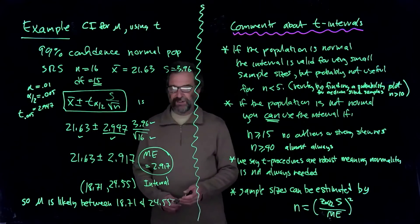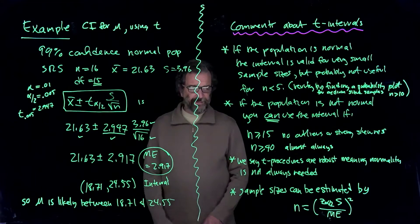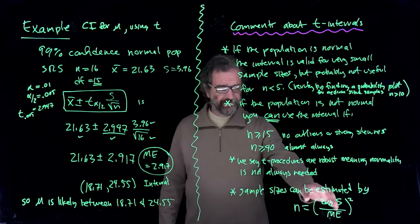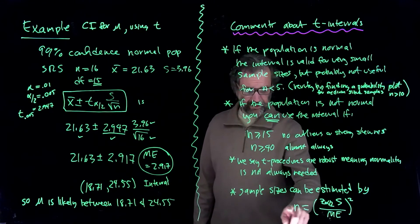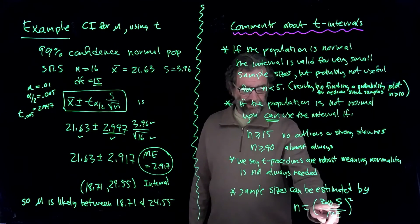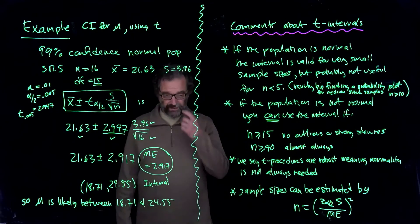So it's a similar calculation that we did with the proportion confidence intervals where there was a formula for sample size involving squaring some stuff. Now there was p hat times 1 minus p hat playing the role of s squared here. But there is a sample size calculation like that.